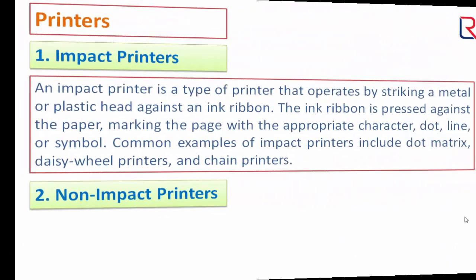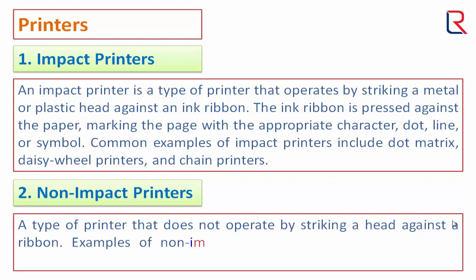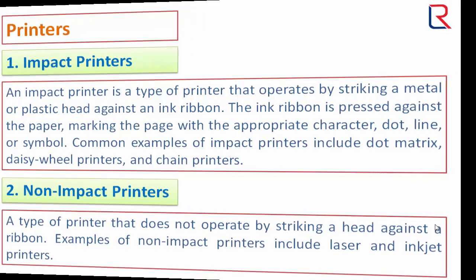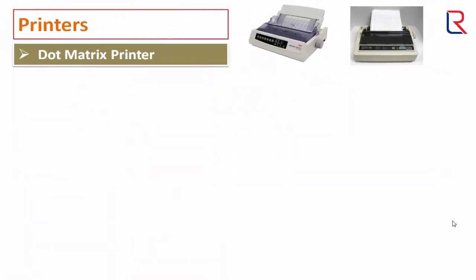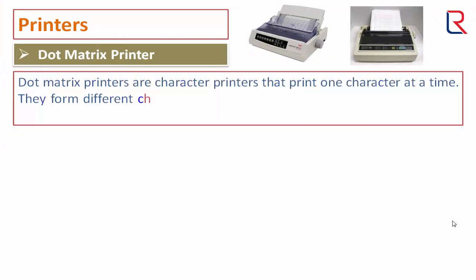A non-impact printer is a type of printer that does not operate by striking a head against a ribbon. Examples include the inkjet printer and laser printer. Now let's see the dot matrix printer.